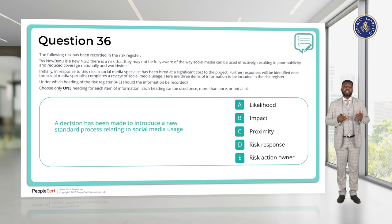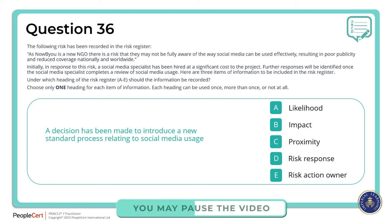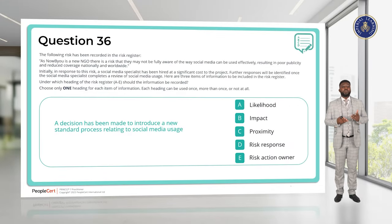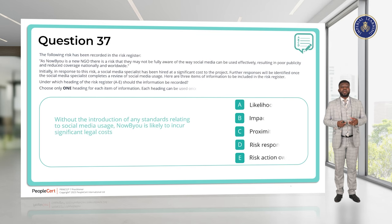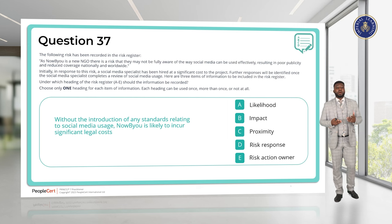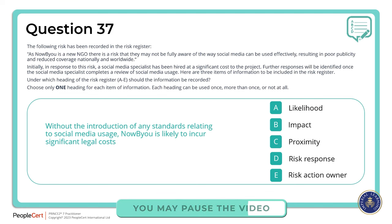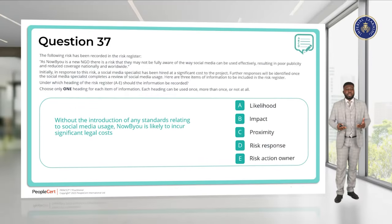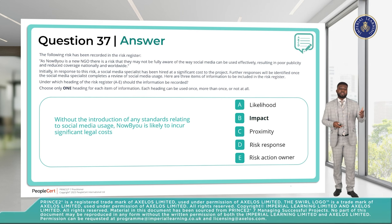Question 36. A decision has been made to introduce a new standard process relating to social media usage. This is our risk response — how we decided to deal with this risk. The answer is the risk response heading. Question 37. Without introduction of any standards relating to social media usage, Now Be You is likely to incur significant legal costs. This is the impact — what will happen if we don't do anything about this risk. The answer is B, impact.